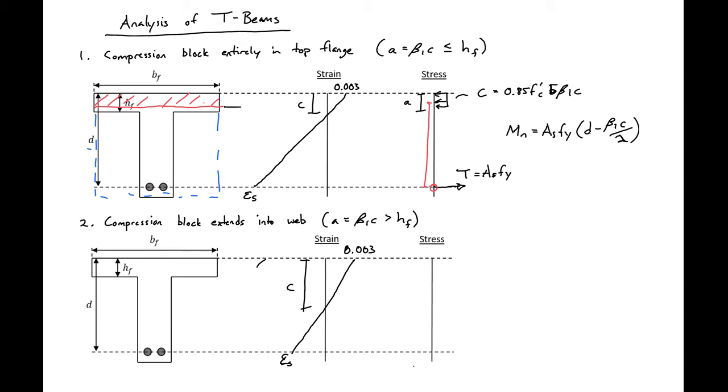And then our compression block and our steel force. So you can see in this case we have our compression block extending down into our web. So we need to analyze this section differently. It's no longer the same as a rectangular section. And we'll take a look at how to analyze this section on the next slide.